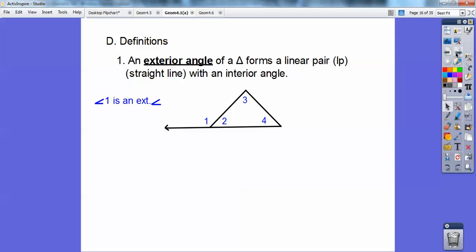Definitions. An exterior angle of a triangle forms a linear pair, which is a straight line, with an interior angle. So this angle right here, see how it's forming a straight line with an interior angle of the triangle? So this is called an exterior angle. Watch when I extend this side right here and it makes that angle out there. Even though that's on the outside of the triangle, that's not considered an exterior angle, because it's not making a linear pair, a straight line, with the inside angle. These are vertical angles. So by definition, this is not called an exterior angle.